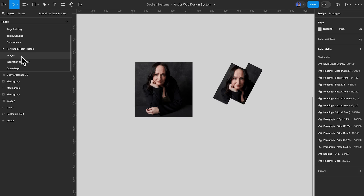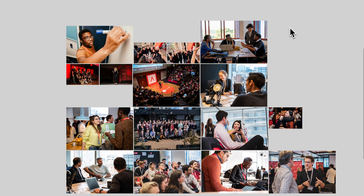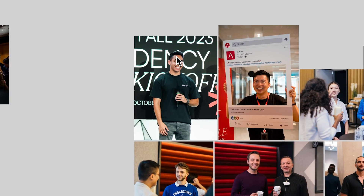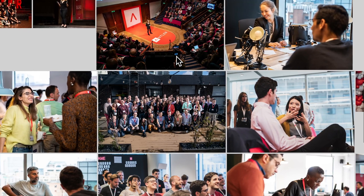Next up we have our images page — a big image bank of images approved for use at Antler on the website. Anytime I find a new set of images that will be good for the website, I can grab them and put them on this page. The benefit is that anytime I need to build a new page, I have quality images to use straight away without having to go searching every time. You can see we've got some nice high-quality images from Antler events or ones approved by the company.